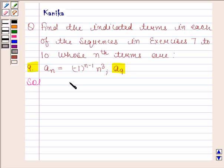Given nth term is a_n = (-1)^(n-1) * n^3.